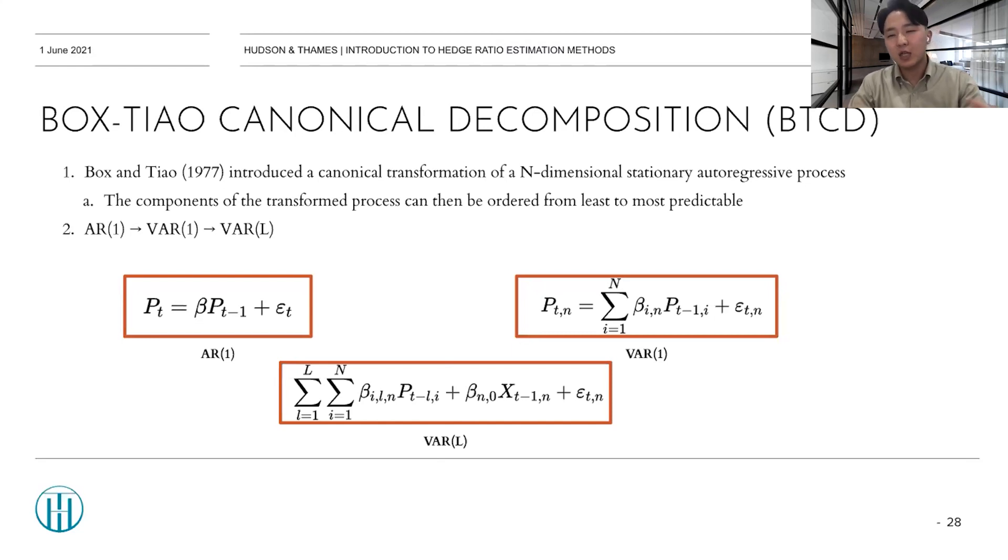In short, the objective is to come up with the matrix of coefficients that deliver a vector of forecast with the most predictive power over the next observation. Although the authors like Box and Tiao, they did not really make a new hedging method. But the concepts they proposed is being used in the hedging ratio estimation area.